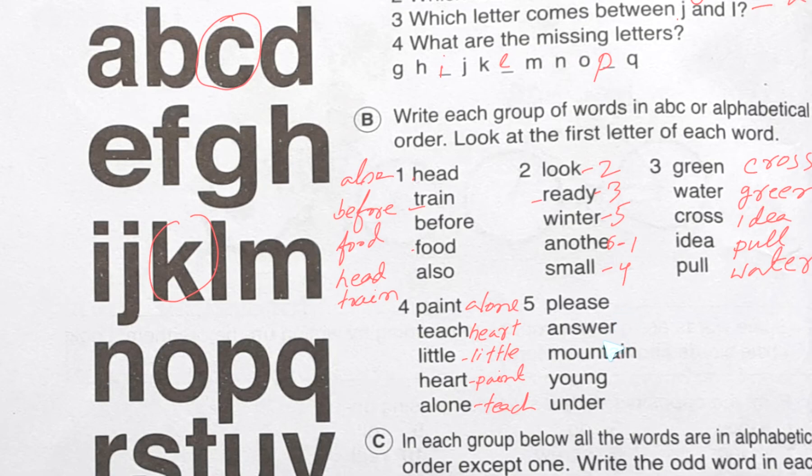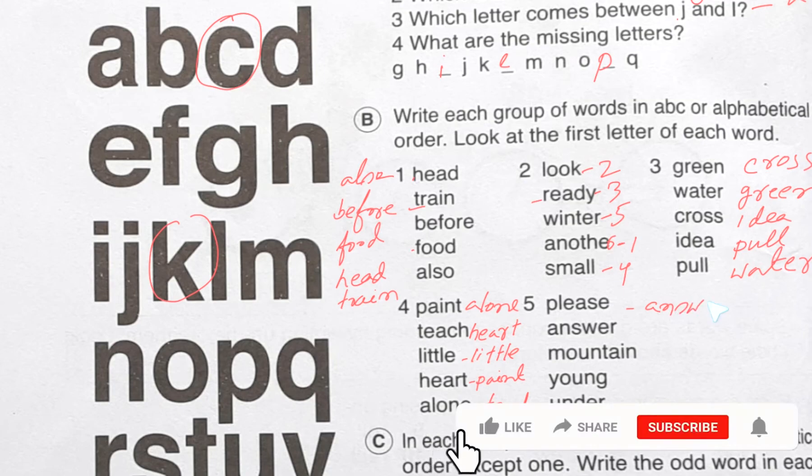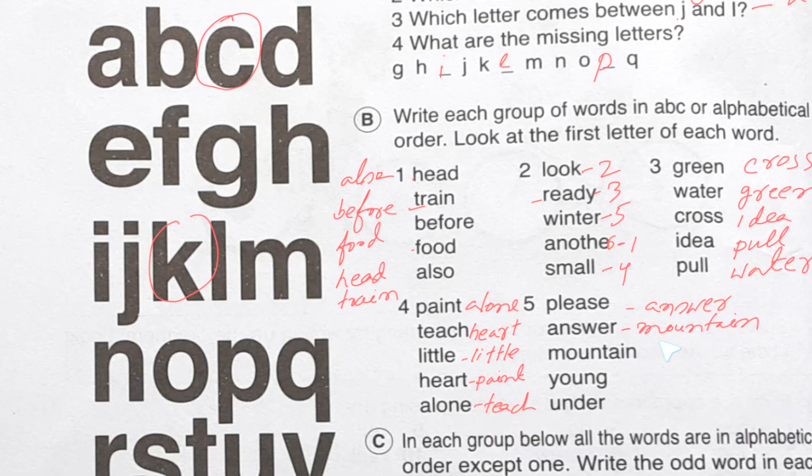Let's do five number. Which one is first? Answer will be first time. Then second: A B C D E F G H I J K L M - mountain. Then M N O P - please. After that U - under. And last one of course young. So easy.